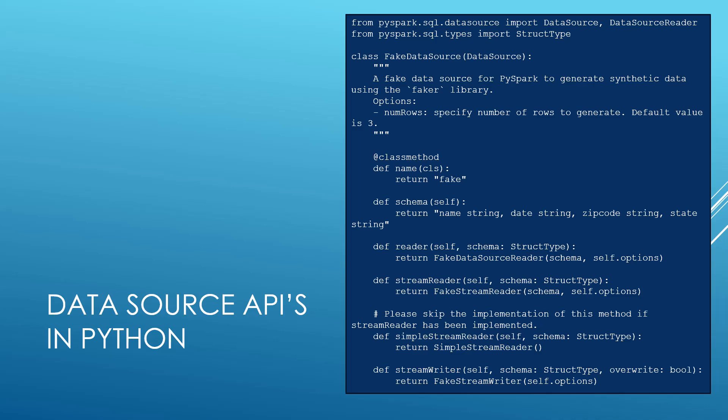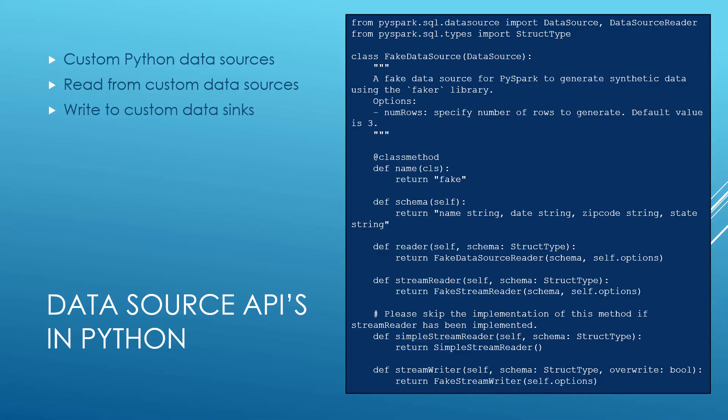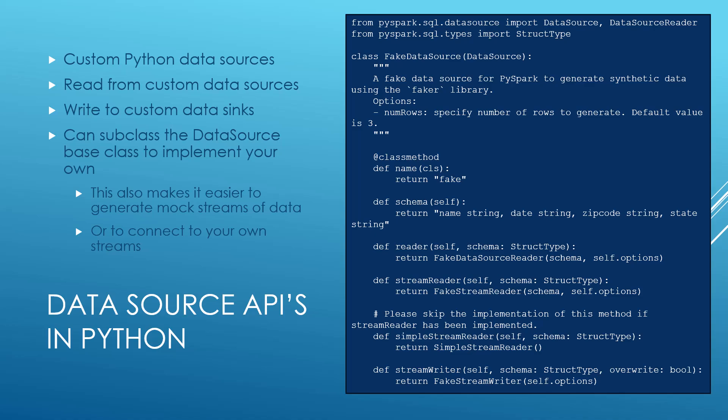Another new feature in Spark 4 is data source APIs in Python — a better way of making custom data sources. Later in this course we have examples using Spark streaming, and we have to jump through hoops to fabricate test data streams. With data source APIs, that becomes much easier — you just create a custom data source and write custom data sinks as well. You subclass a data source base class and fill in how it accesses data. This used to exist outside of Python; the new thing in Spark 4 is that there's now a Python API for it.